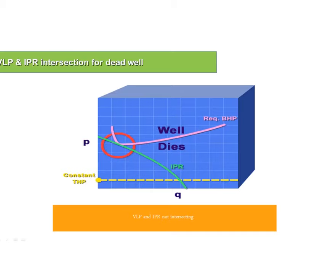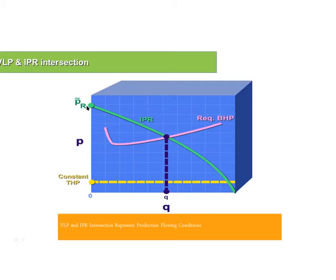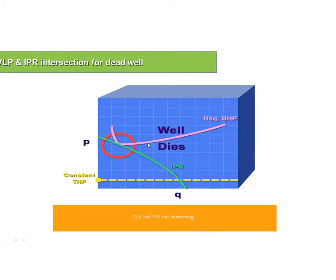In certain cases, imagine I started with a certain reservoir pressure and corresponding productivity index, and a certain outflow performance relationship for a given water cut, gas-oil ratio, and tubing head pressure. Then over time, my reservoir pressure decreases — the IPR curve shifts down. The two curves no longer intersect, which means my well will not be able to produce.